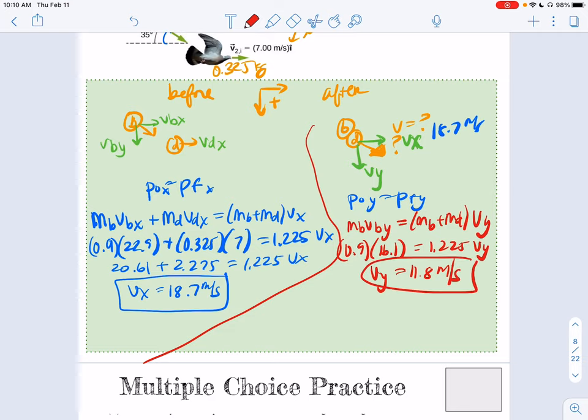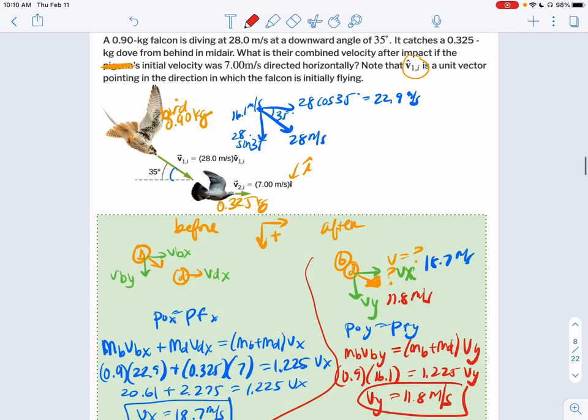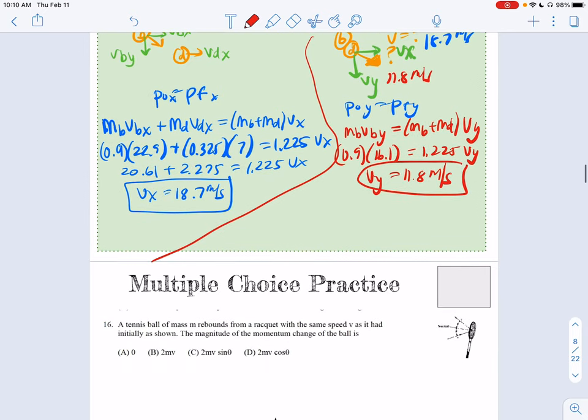And that's also positive because it's down, where it's going to be here. So then it probably asks for what is their combined velocity.